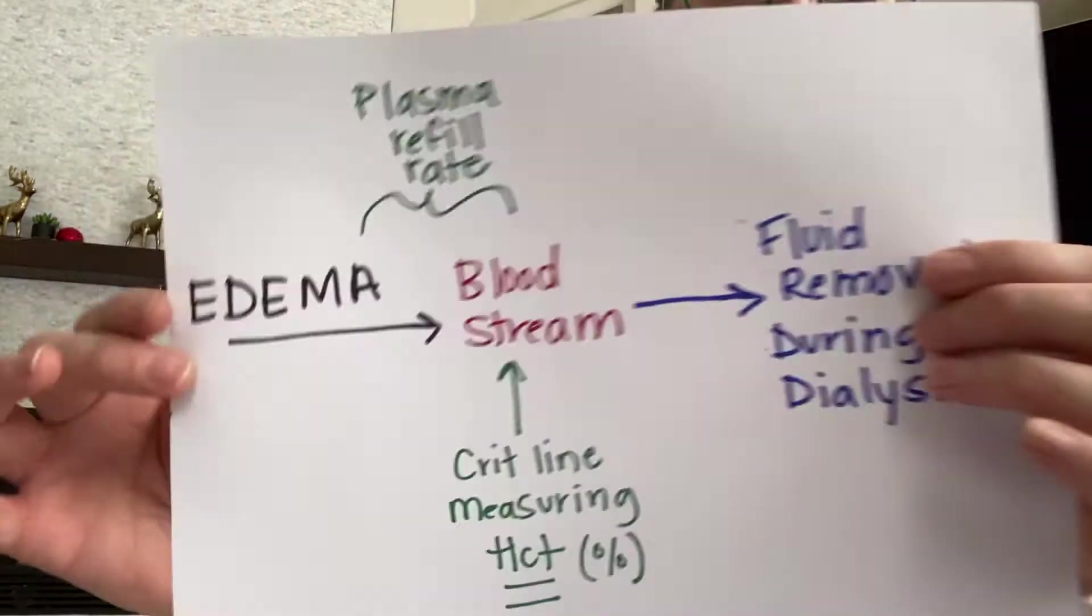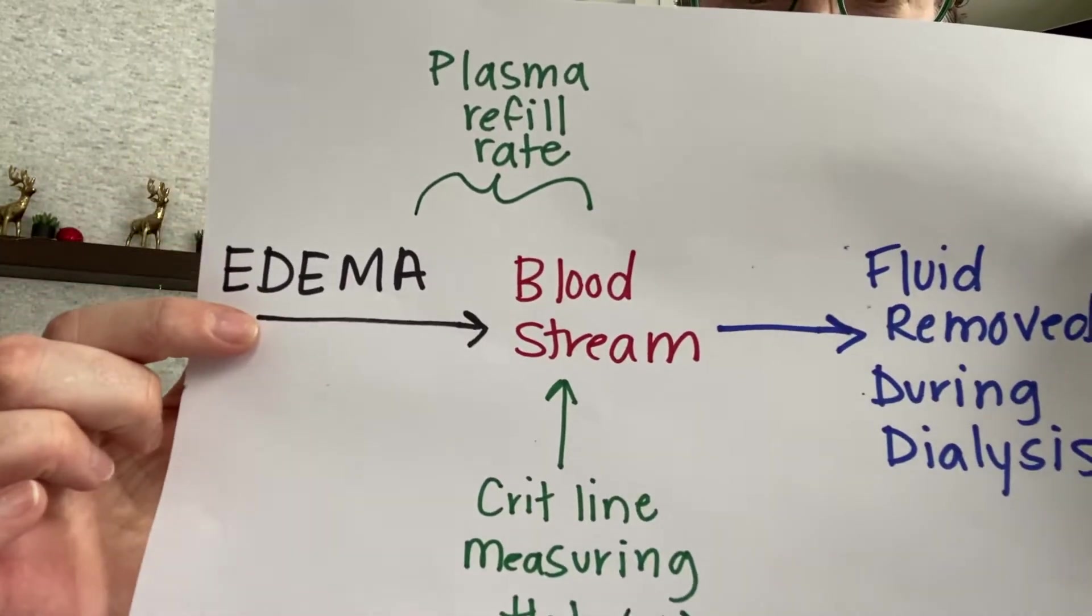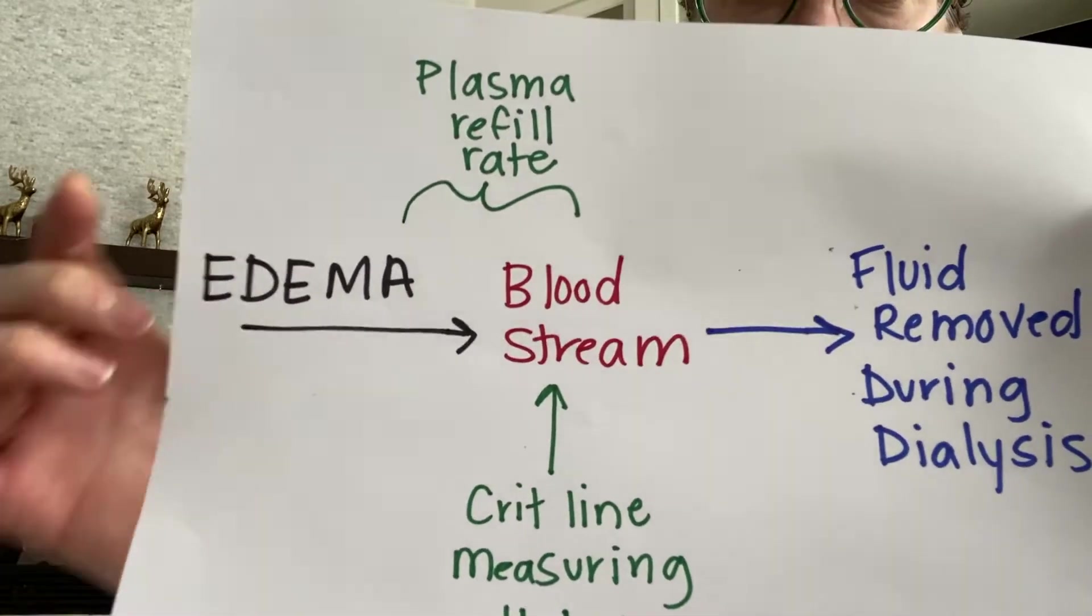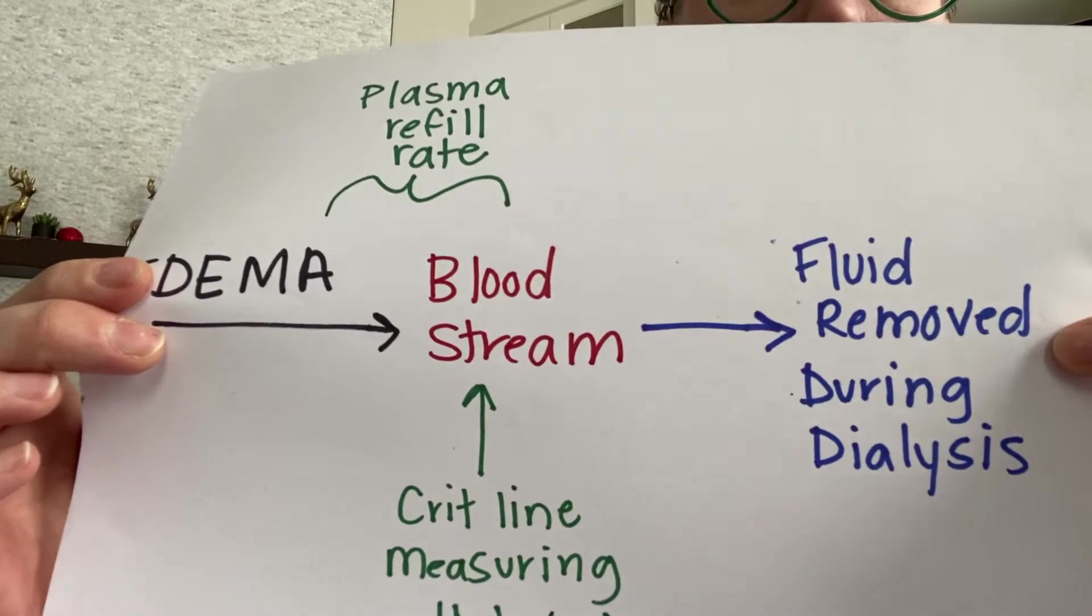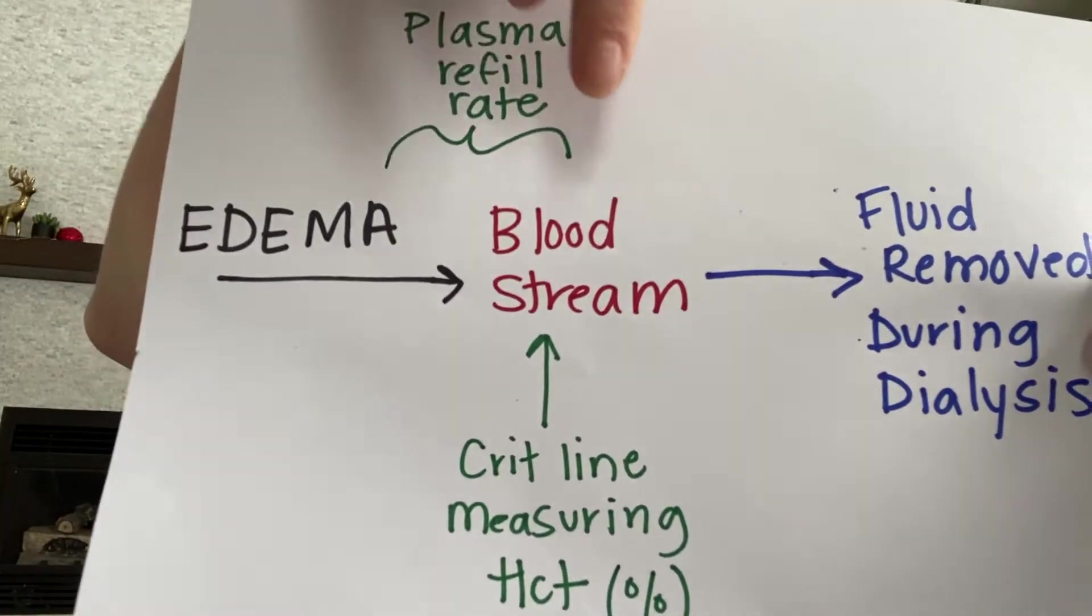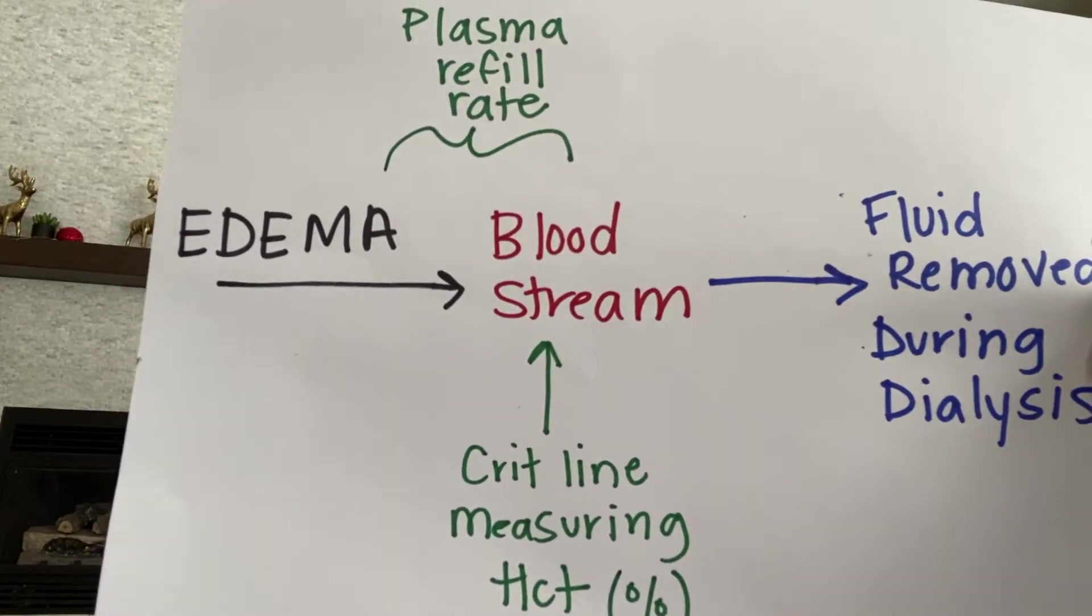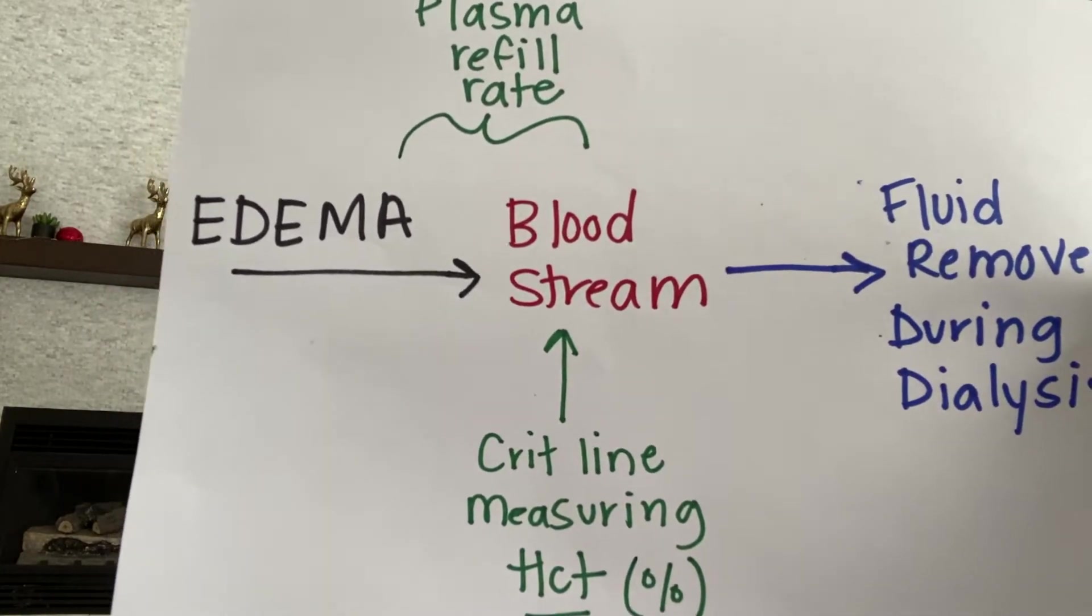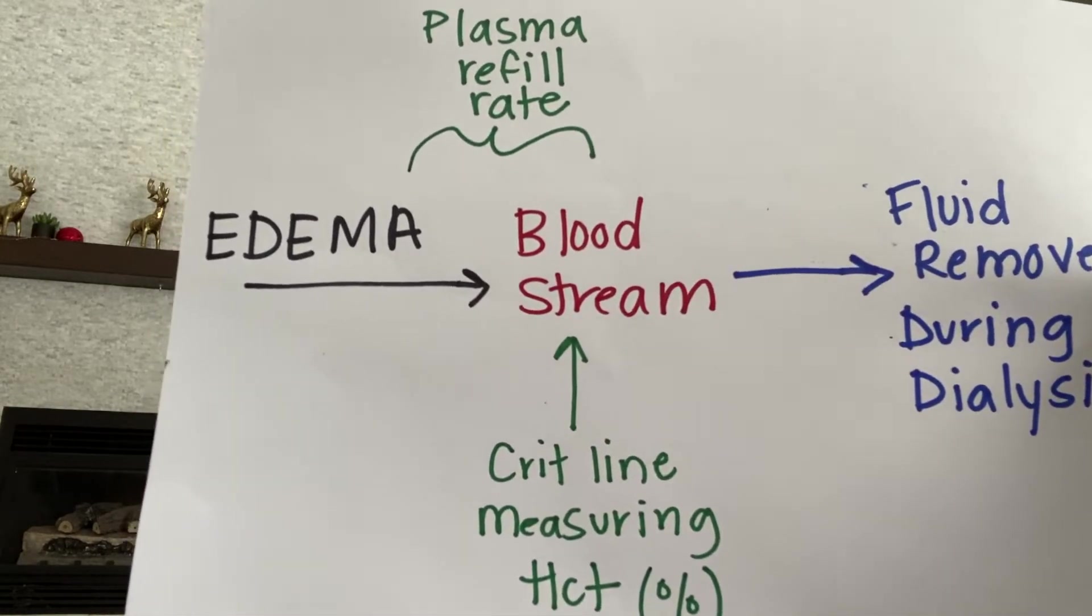I'll have another visual here. What's happening to the patient is they have edema, they're full of fluid. We have their blood going through the dialyzer and we're removing fluid during dialysis. If we're removing fluid from the blood, they're losing vascular space, and if they continue to lose vascular space, their blood pressure is going to drop.